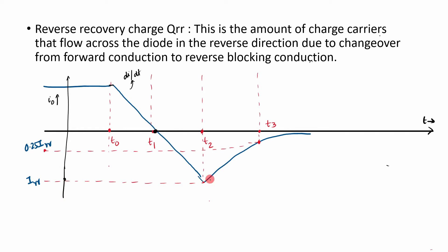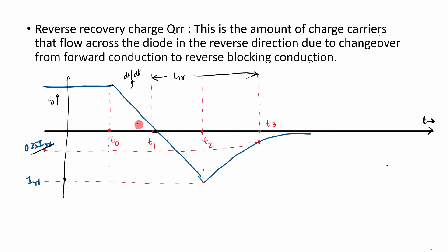At t1, you can see the current becomes equal to zero. At t2, the current becomes equal to the reverse recovery current IRR, and finally at t3 the current becomes 25% of the reverse recovery current. The time between t1 and t3 — where the current falls to zero and then reaches 25% of the reverse recovery current — is called the reverse recovery time. The total charge flowing during this reverse recovery time is called the reverse recovery charge.